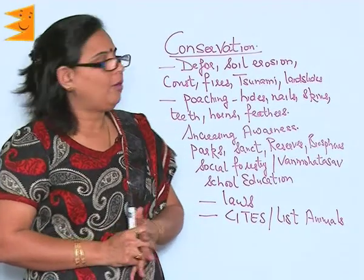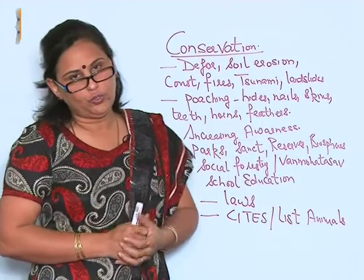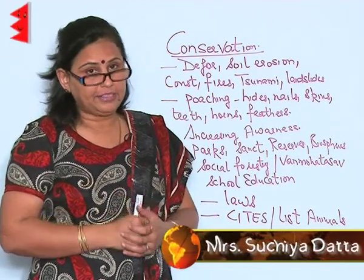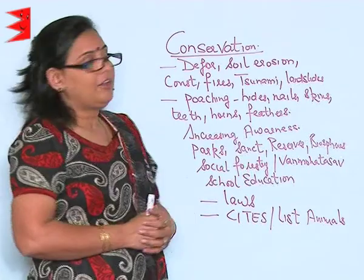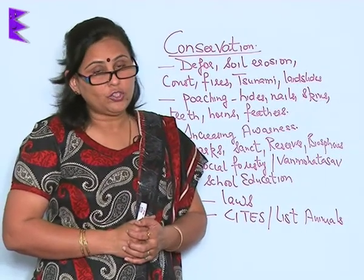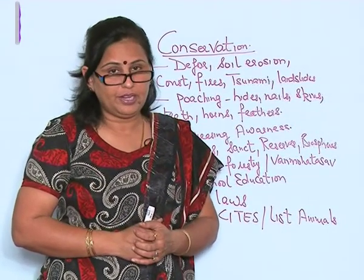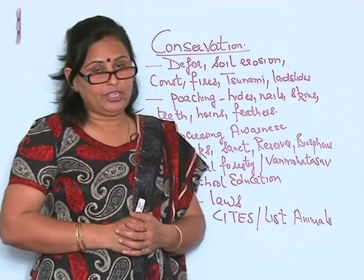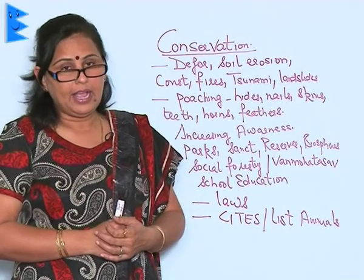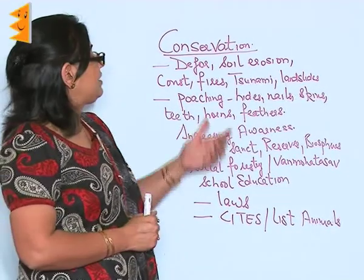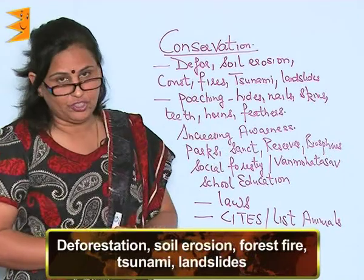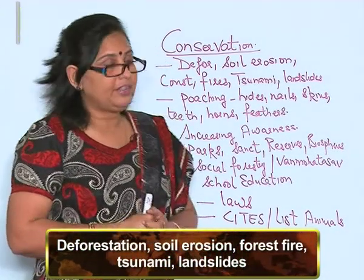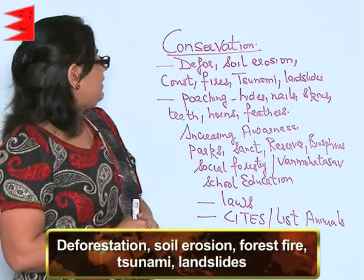Now we will be talking about the conservation of natural vegetation and wildlife. The factors responsible for so much loss in natural vegetation include human factors and natural disasters such as deforestation, soil erosion, forest fires, tsunami, and landslides.